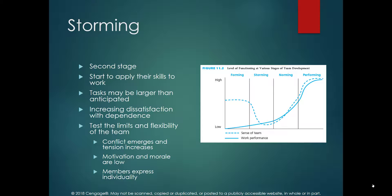The next stage is Storming, where members start to apply their skills on their assigned jobs and we begin seeing slow progress on actual work. People start working on their assigned tasks but progress is very slow. At the beginning they were excited, but seeing the actual work may make them dissatisfied because they feel dependent on the project manager.